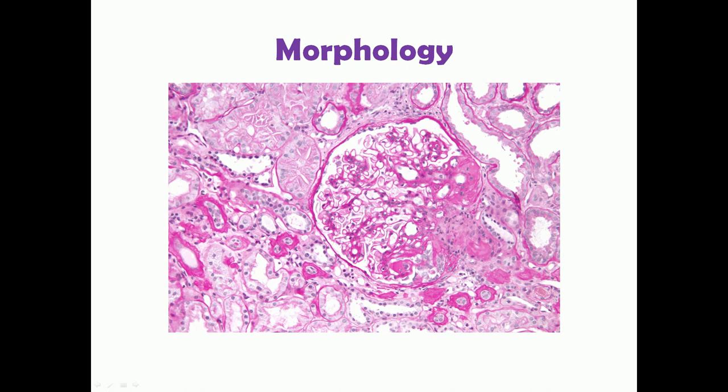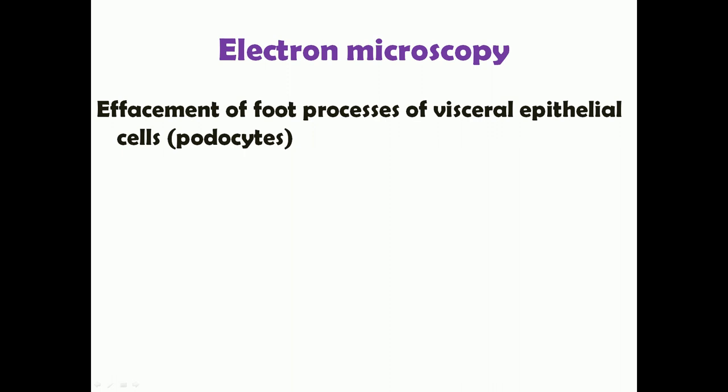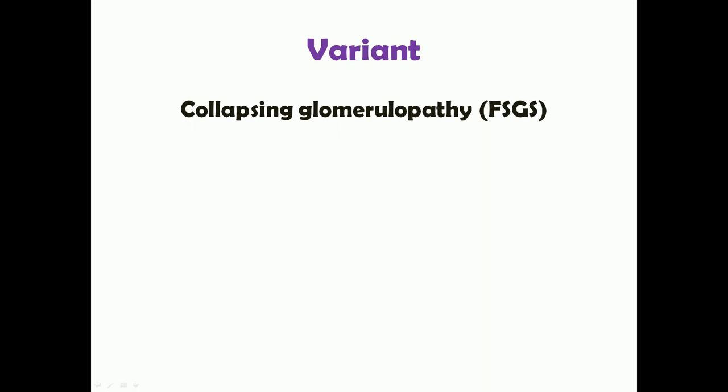Regarding morphology: focal segmental glomerulosclerosis can be identified by light microscopy. You can see hyalinosis and mesangial proliferation in the affected segment. However, effacement of foot processes cannot be seen on light microscopy — for that you need electron microscopy, which shows effacement of foot processes of visceral epithelial cells (podocytes). Since electron microscopy is not affordable in most health centers, light microscopy is used in most cases.